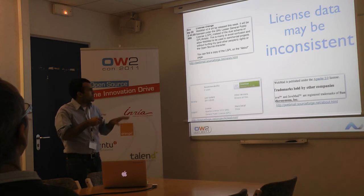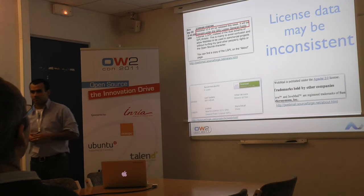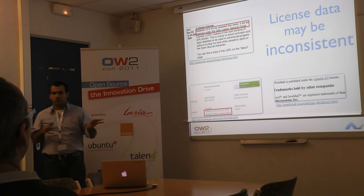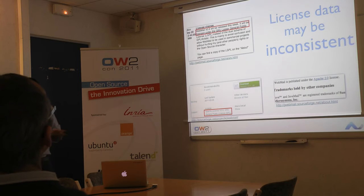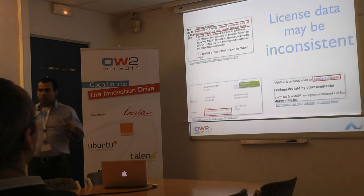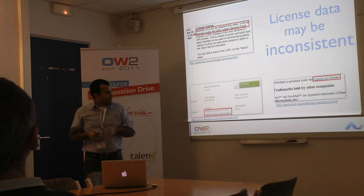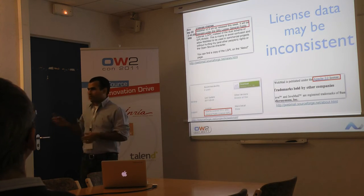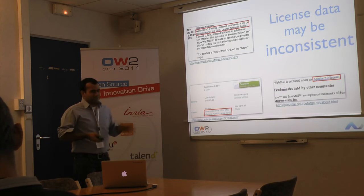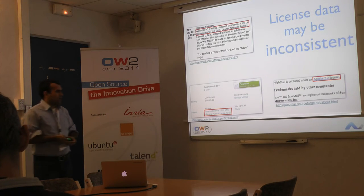There is another example of this real-world problem: license data may be inconsistent. Here we have different excerpts from the Gwebmail website. The first one says Gwebmail is under the LGPL license. If you go to their source form page, you find a mixture of Apache version 2.0 and GPL license. Then on their about page, it states the whole software package is bundled under Apache 2.0. And if you go into the code, you find no reference to any license at all.